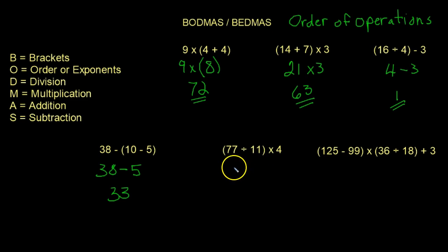So 77 divided by 11 is going to be 7, multiplied by 4. 4 sevens are 28, if you know your multiplication tables.